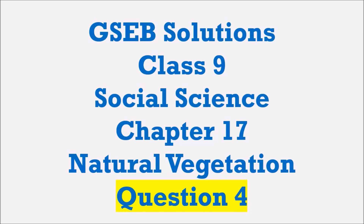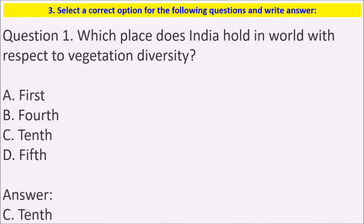So let's see Question 4. Select the correct option from the following questions and write the answer. Which place does India hold in the world with respect to vegetation diversity? India holds 10th place in the world with respect to vegetation diversity.